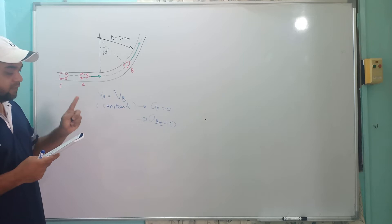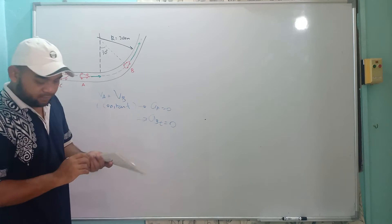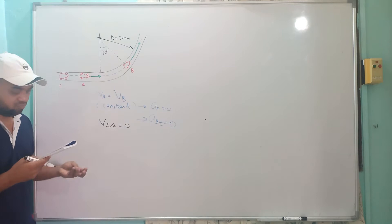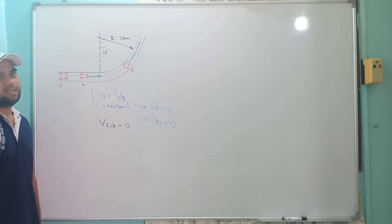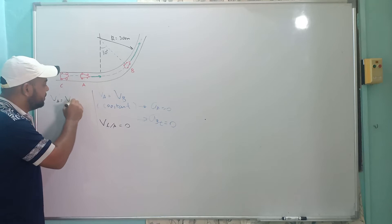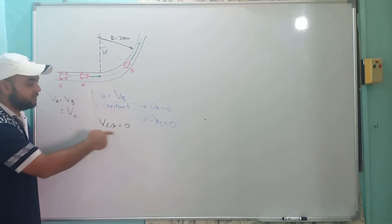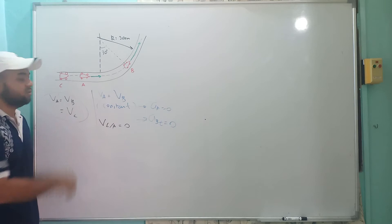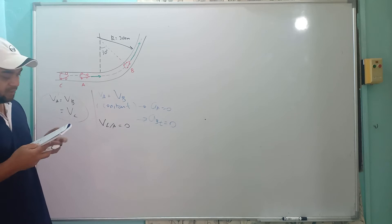The second piece of information: the velocity of car A relative to car C is zero, which means V_C relative to A is also zero. From this we can conclude directly that VA equals VB equals VC, because V_C relative to A equals zero means they are at the same speed, and since VA equals VB and all are constant, VA = VB = VC.